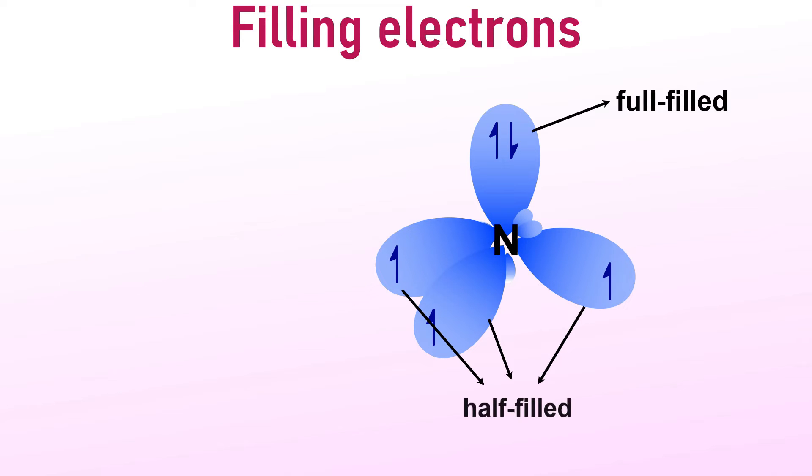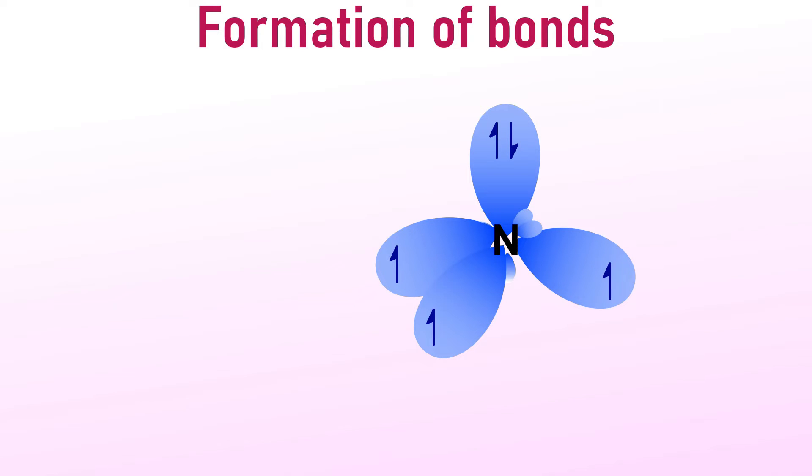And this results in one full filled and three partially filled sp3 hybrid orbitals. The half filled sp3 hybrid orbitals form sigma bonds by overlapping with the half filled s orbitals of hydrogen atoms.